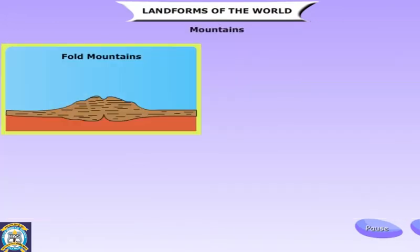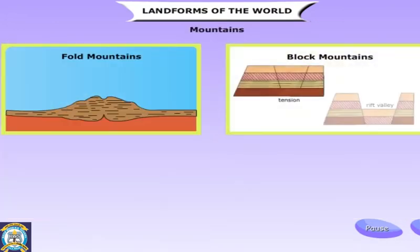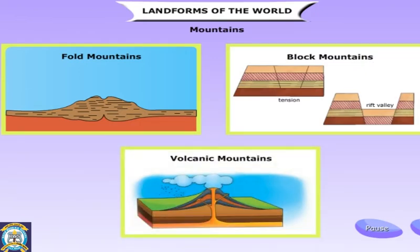Mountains are formed in different ways, mainly due to pressure inside the Earth's crust. Fold mountains are formed due to compression. Sometimes the crust of the Earth cracks up, and the land between the two cracks may get pushed up and form block mountains. The hot molten rock inside the Earth is known as lava. This cools and becomes solid, and these lava layers build up and form a cone-shaped volcanic mountain.